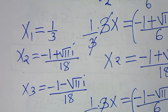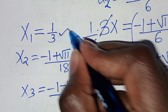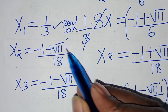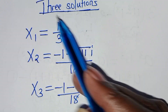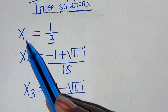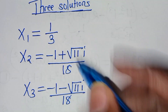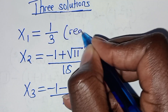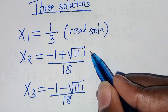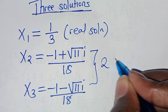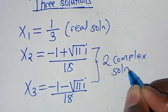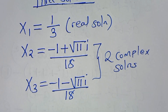This implies that we have only one real solution and two complex solutions. We have three solutions in total to this algebra problem: x₁ is the real solution, and x₂ and x₃ are the two complex solutions.